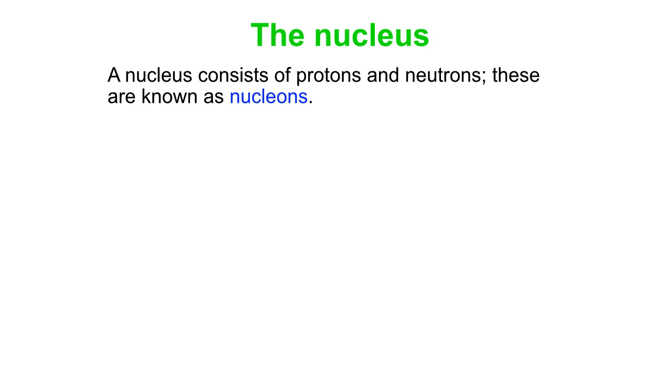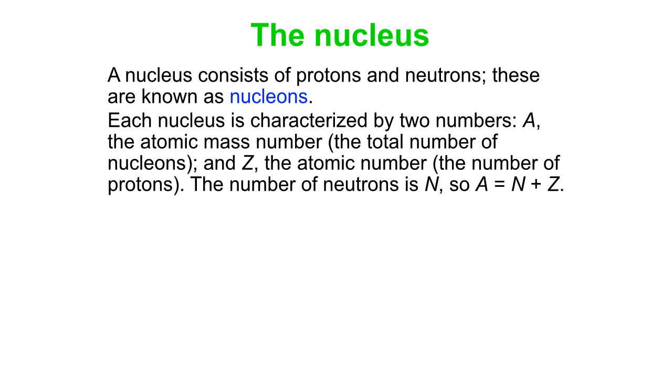Here's a new word for you: nucleon. A nucleus consists of protons and neutrons, and collectively protons and neutrons are known as nucleons, particles found in the nucleus. We characterize every nucleus by two numbers: A, the atomic mass number, that's the total number of nucleons, and Z, the atomic number, the number of protons. So A equals N plus Z, N being the number of neutrons.